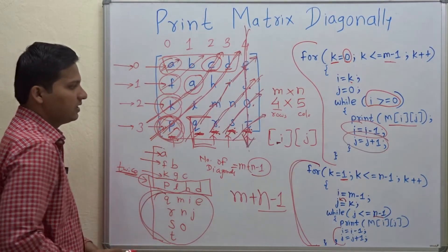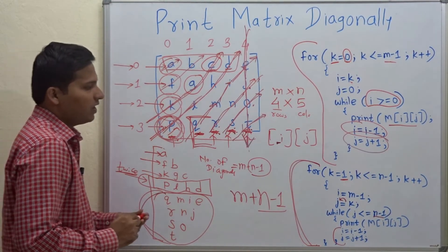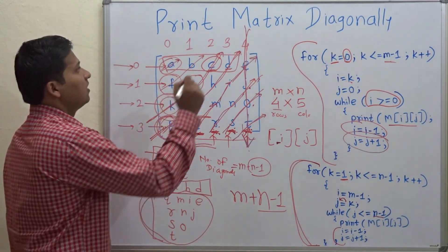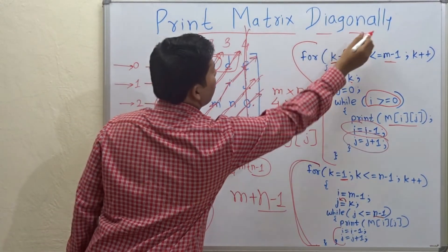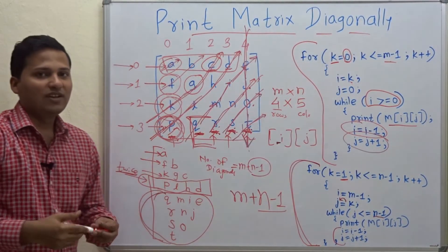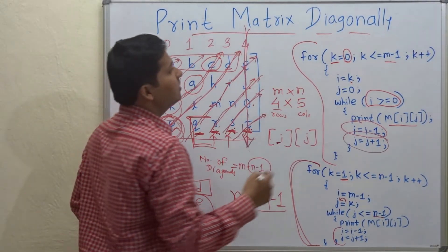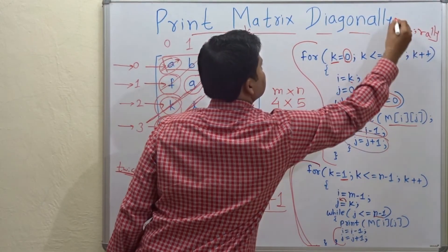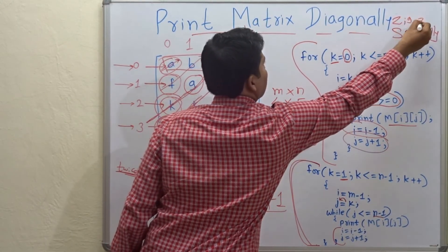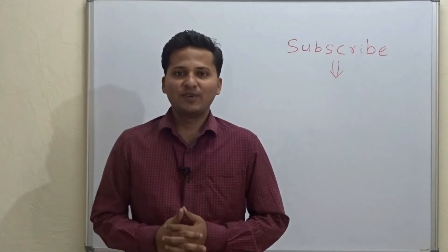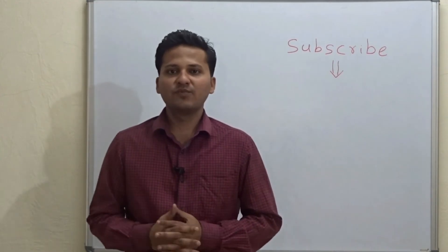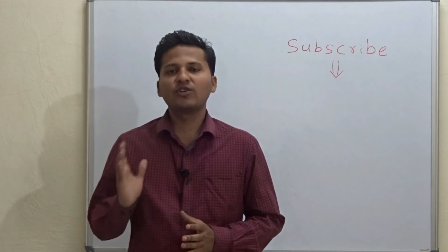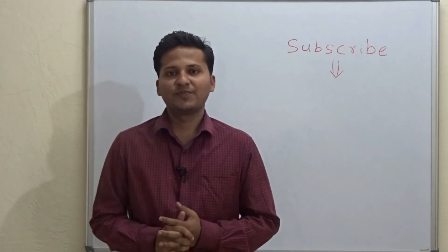This is how we print all the diagonals of the matrix — that is called printing the matrix diagonally. In the next video, we'll see how to print the matrix diagonally and spirally in a zigzag way. Please subscribe to the channel as algorithm videos are posted every day, and if you want a video on any particular topic, please mention it in the comments below.